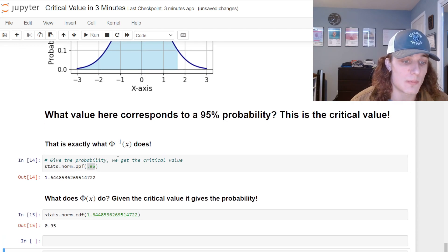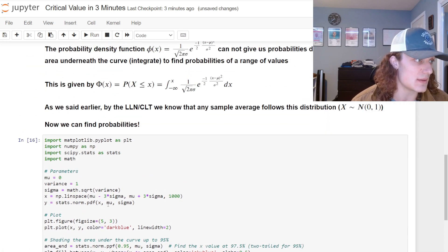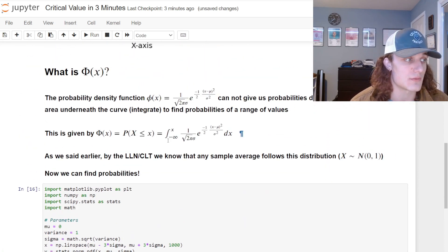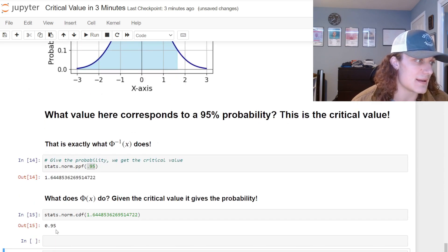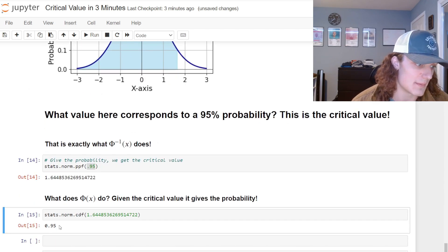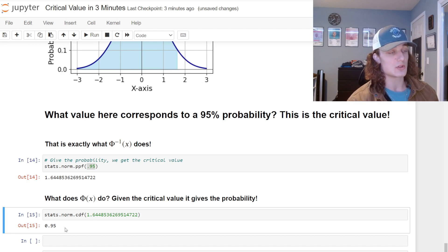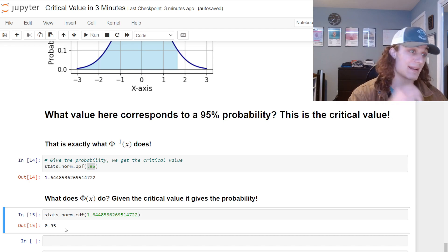So then, if I was to plug in 1.65 into this cumulative distribution function for a standard normal random variable, I am going to get a 95% probability. That is the relationship between critical values and the corresponding cumulative distribution function, and that cumulative distribution function's corresponding probability density function.